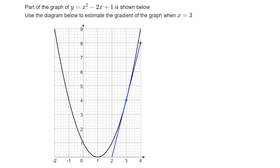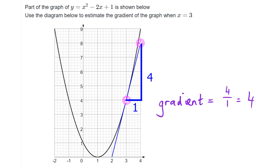The gradient is the steepness of the line - how many units up we go compared to how many units across. It's the change in the y coordinate over the change in the x coordinate. I'm choosing two points where the coordinates are easy to read. I've gone across one unit and up four, so the gradient is four over one, which is just four. The question says 'estimate' because we've drawn the line in, so we can't say with 100% certainty it's precisely four.